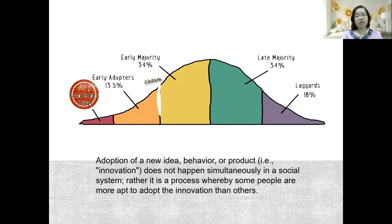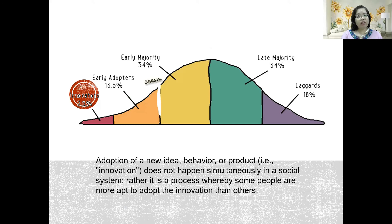Innovators are the ones who, when, let's say, the Fitbit first came out, were the first to purchase it and try it out. Then there are the early adopters — the group that has seen the innovators use it, likes what the initial use has shown, and therefore goes for it, purchasing the product or trying out a new style of doing things. Not all technologies make it to the mainstream, and this is why Rogers placed a chasm between early adopters and the early majority.